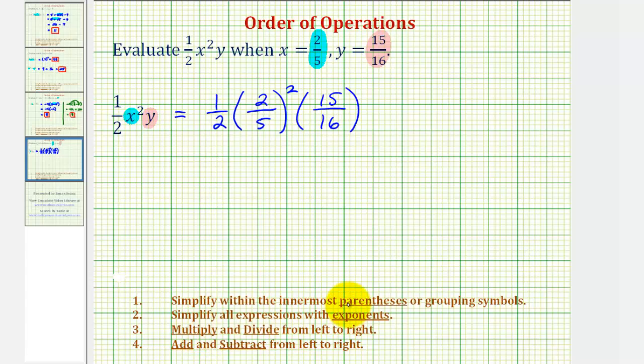We want to simplify the exponents. So now we want to simplify two-fifths squared. To square a fraction, we just square the numerator and square the denominator. So this would be equal to one-half times two-squared is four, and five-squared is twenty-five.